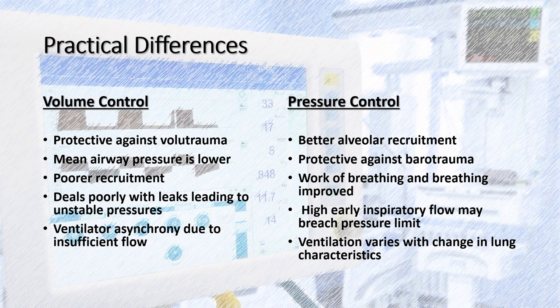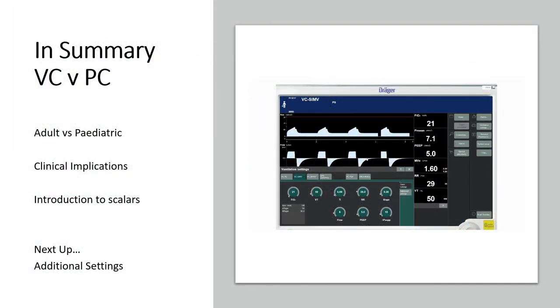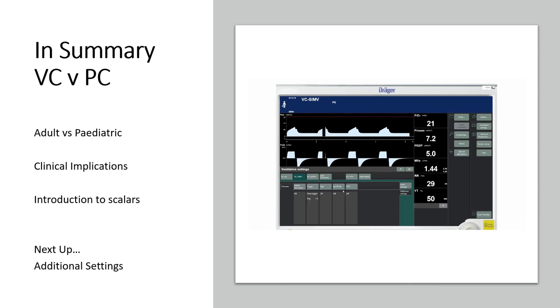Regarding patient comfort: the high initial flow rate of a pressure breath can lead to a lot less ventilator asynchrony, which you can sometimes see in volume control ventilation. That's all for today — we've looked at volume control versus pressure control ventilation, the adult and pediatric approaches, clinical implications, and a brief introduction to scalars. Next up, we'll be looking at some additional ventilator settings.